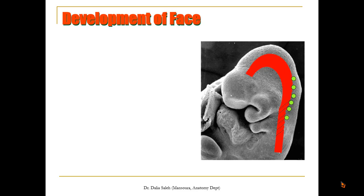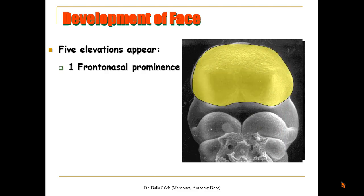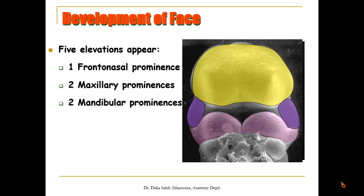The cranial neural crest cells migrate from their original location around the developing brain and invade the developing structures of the head and neck, triggering the formation of structures like the skeleton of the cranium, the skeleton of the face, the muscles, vessels, and nerves. If we rotate the embryo and look at its ventral aspect, we notice five elevations at the region of the future face: the frontonasal prominence, which is a condensation of mesenchyme overlying the forebrain; two maxillary prominences, representing the dorsal aspect of the first pharyngeal arch; and two mandibular prominences, representing the ventral aspect of the first pharyngeal arch.